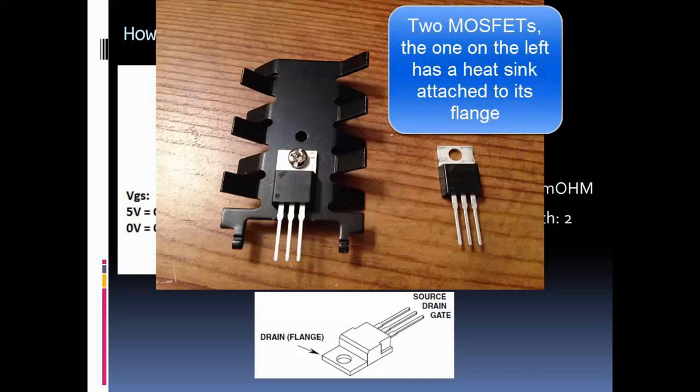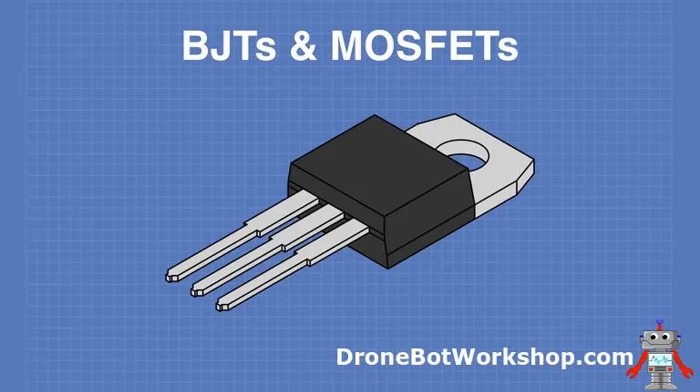Voltage regulators often use feedback mechanisms to continuously monitor the output voltage and adjust the MOSFET's operation accordingly, helping compensate for variations in input voltage and changes in the load. MOSFETs are also commonly employed in Low Dropout Regulators, LDOs, which can maintain a stable output voltage even when the input voltage is very close to the output voltage — particularly useful in battery-powered devices.